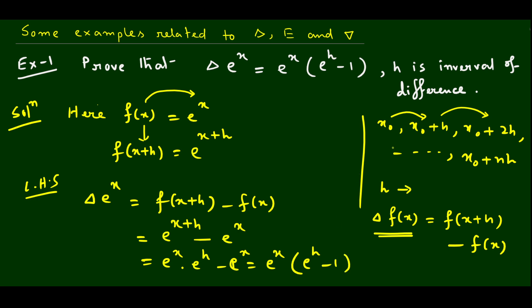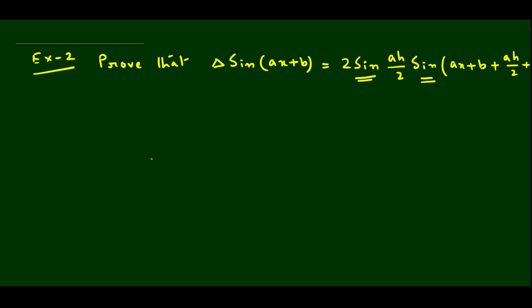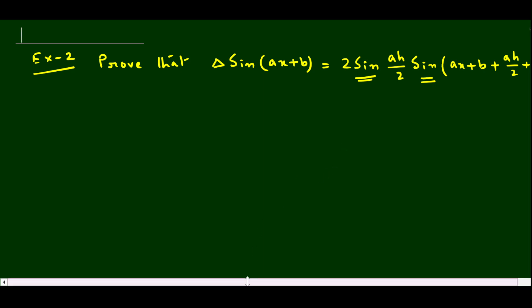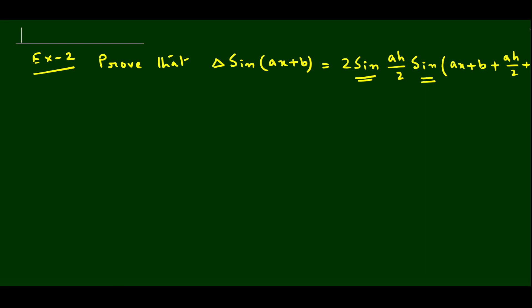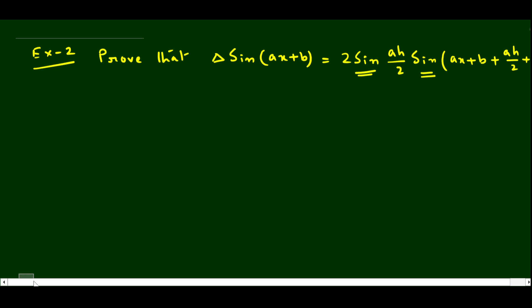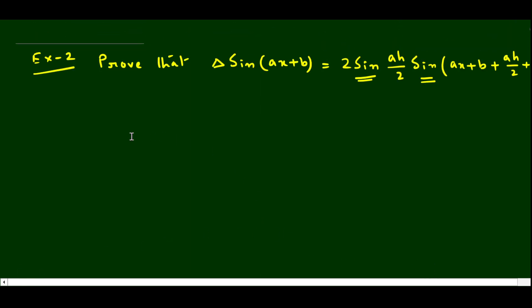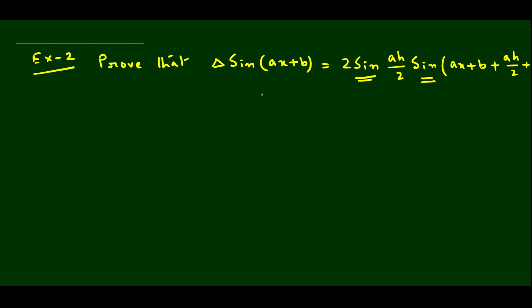Now let's take another problem, also based on delta. We have to prove that delta sin(ax+b) equals 2 sin(ah/2) · sin(ax + b + ah/2 + π/2).